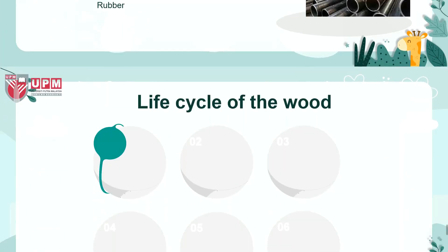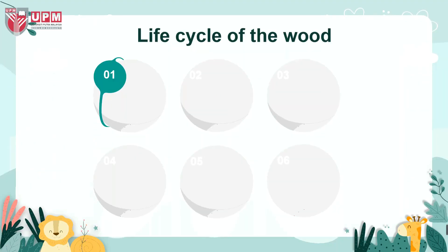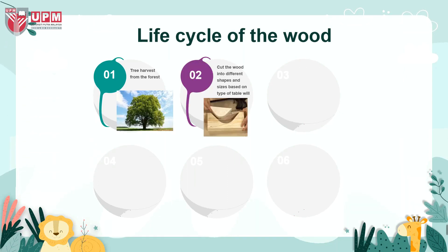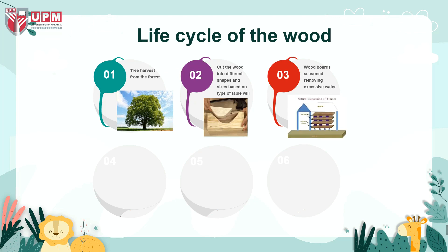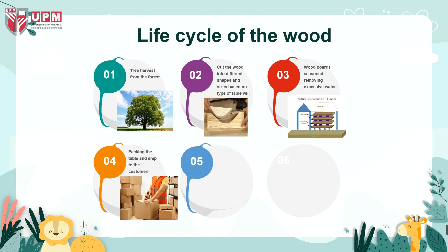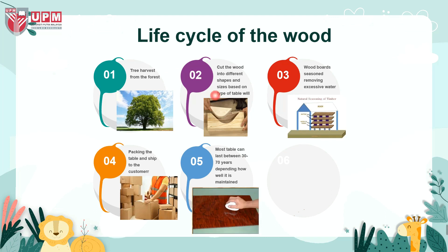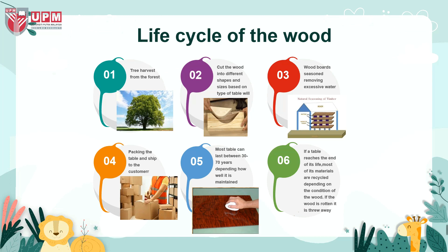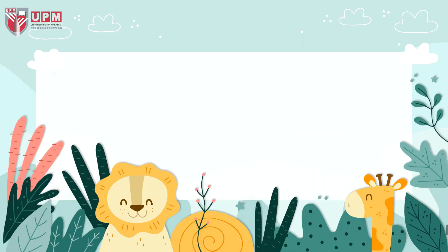Life cycle assessment of wood: the first step is to harvest the wood from the tree. Then the wood will be cut into different shapes and sizes based on the type of table. After that, the wood boards are seasoned, removing excessive water. The next step is to pack the parts well and ship them to the customer. Most tables can last between 30 to 70 years depending on how well they are maintained. When a table reaches the end of its life, most of its materials are recycled depending on the condition of the wood. If the wood is rotten, it is thrown away.